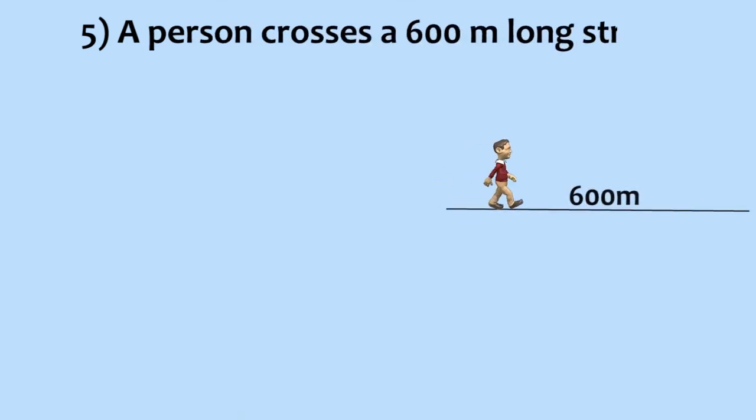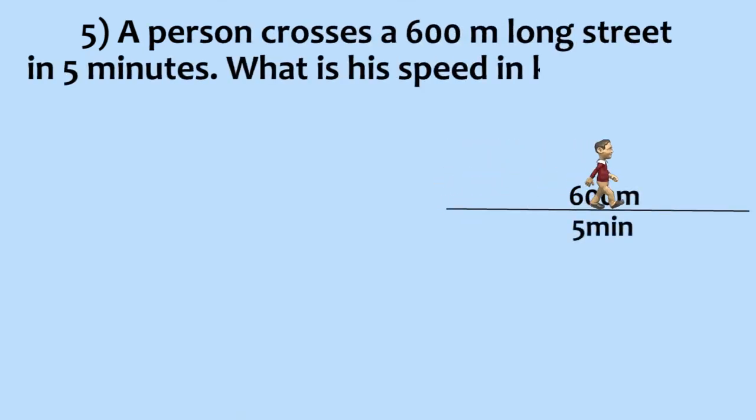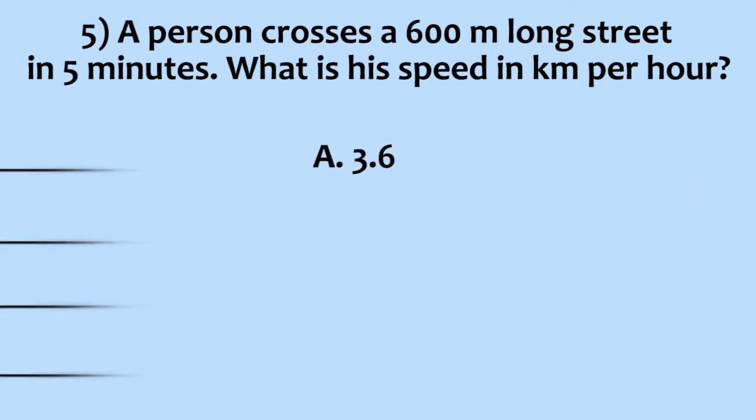A person crosses a 600 meter long street in 5 minutes. What is his speed in kilometers per hour? 3.6 kilometers per hour, 7.2 kilometers per hour, 8.4 kilometers per hour, 10 kilometers per hour.